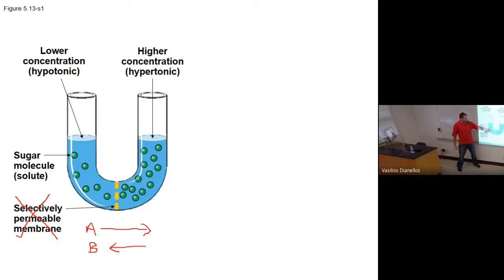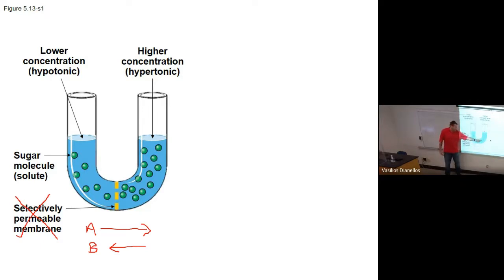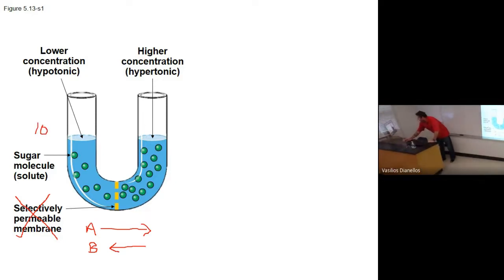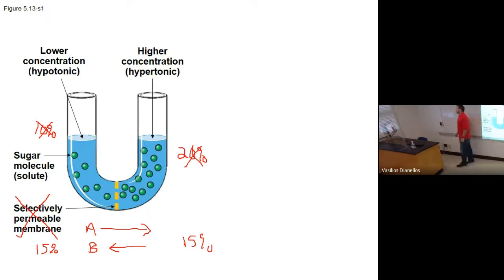B is correct, right? The balls are at higher concentration on one side and lower concentration on the other. Diffusion tells us nature wants these things to go from high to low concentration until equilibrium is reached. Let's say that's a 10% solution on one side and 20% on the other. Those balls are going to move until you hit 15% on one side and 15% on the other. That's how they would move until equilibrium — meaning the same concentration — is reached.